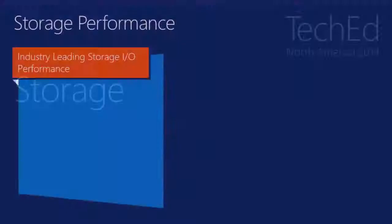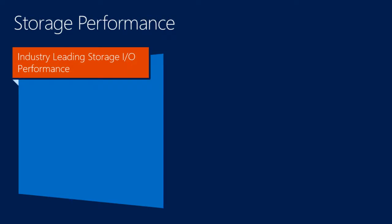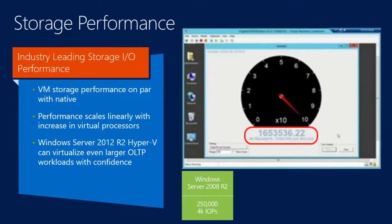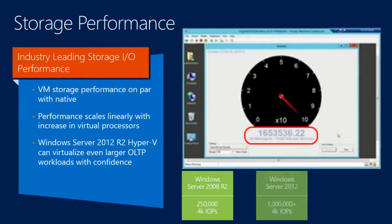From a storage standpoint, we've been heavily focused on giving you the best possible I/O performance. Most of the time, Hyper-V is waiting on storage. People ask me about processor speeds, and my answer is: I don't care — I've got cores coming out my ears. What I really want to know is how fast the storage can talk to me. We have VM storage performance on par with native. We've done huge investments in the VHDX format and the storage stack. Performance scales linearly with an increase in virtual processors.